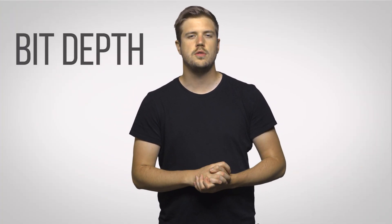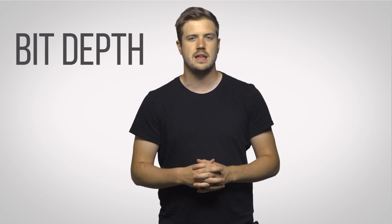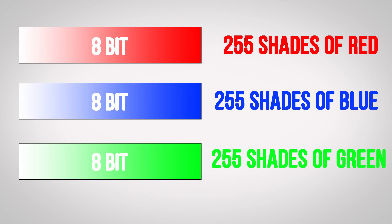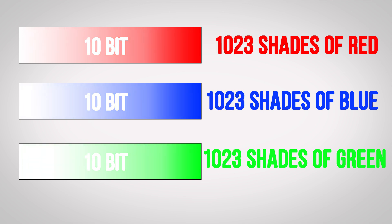Color saturation also ties into bit depth. Many monitors use 8 bits per channel, meaning that the intensity of red, green, and blue is expressed with an 8-bit value. With an 8-bit display you wind up with 255 possible values ranging from pure white to a completely saturated red, green, or blue. 10-bit displays by contrast have 1,023 possible values, meaning that they can display over a billion colors and make gradients appear smoother, as opposed to having banding bars on 8-bit displays.